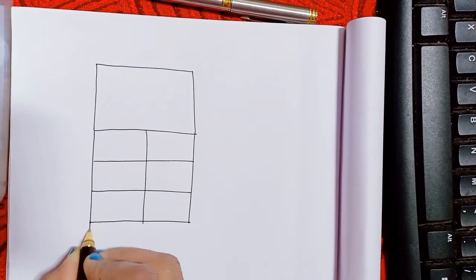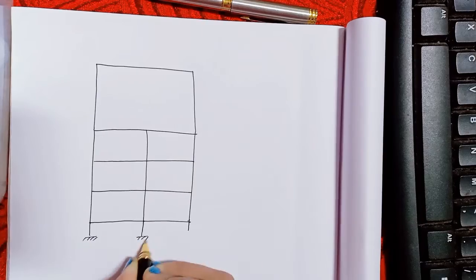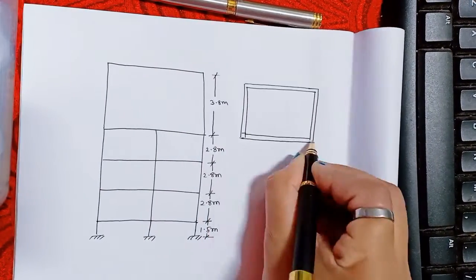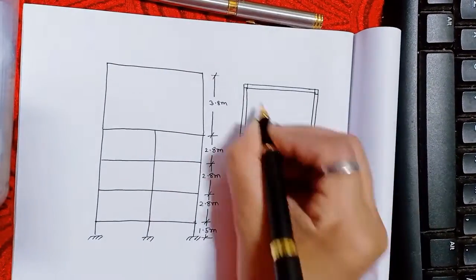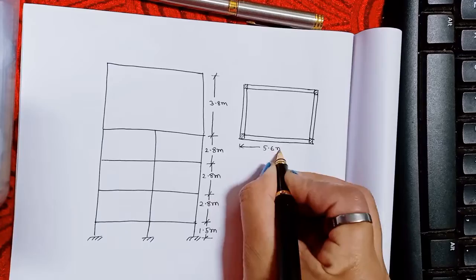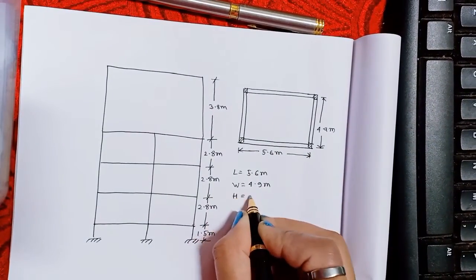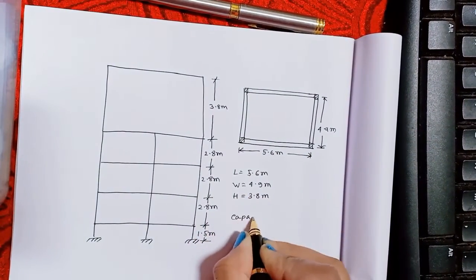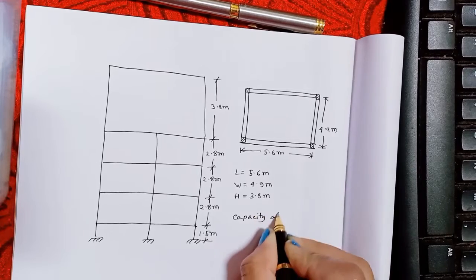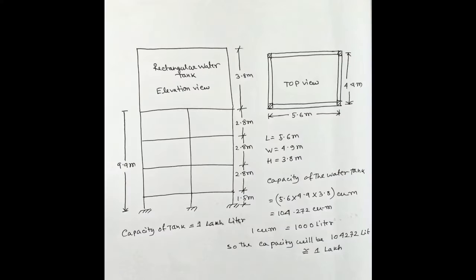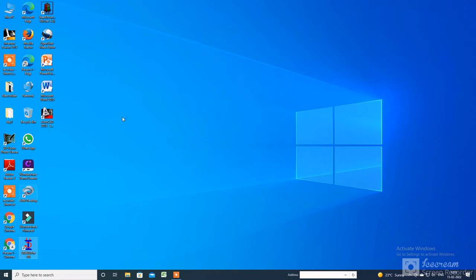Here I am going to create a rectangular elevated tank with a length of 5.6 meters, a width of 4.9 meters, and a height of 3.8 meters. The distance from the ground level is 9.9 meters.